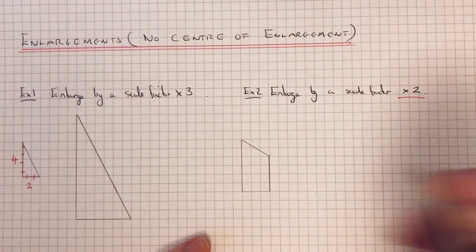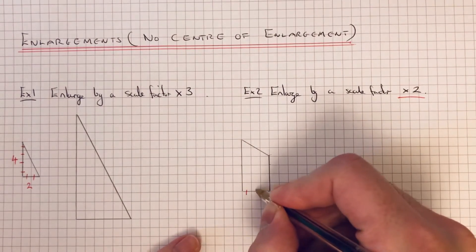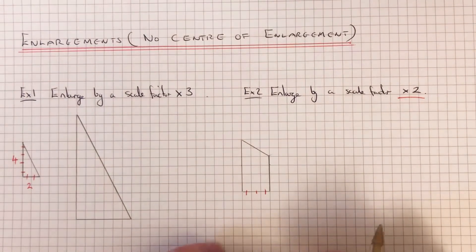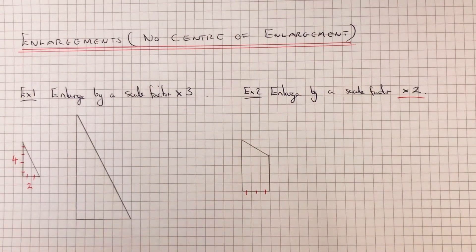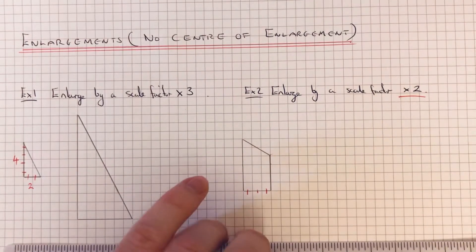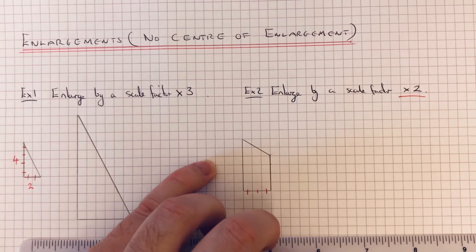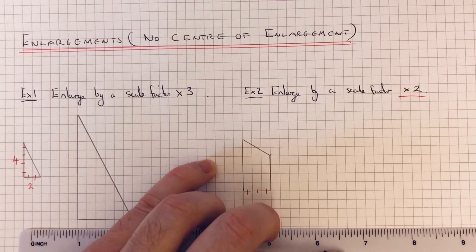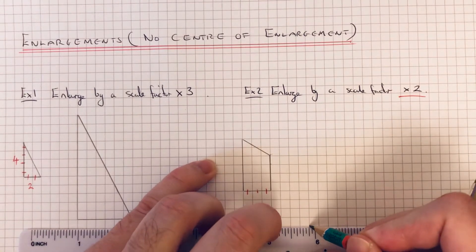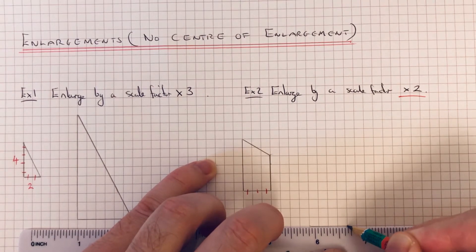Let's do the base first. So going across we've got 1, 2, 3. So 3 doubled because our scale factor is times 2, that's 6 squares going across. So 2, 4, 6.